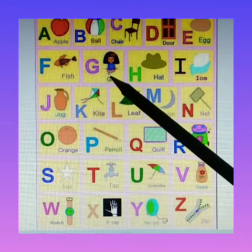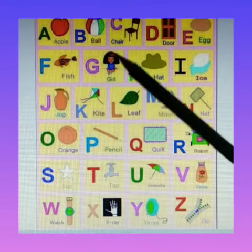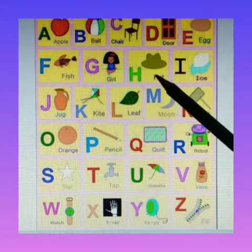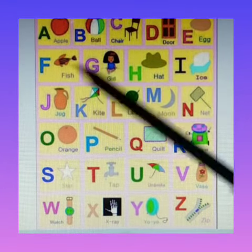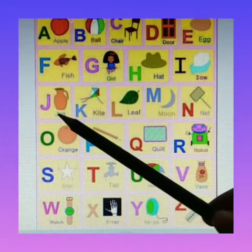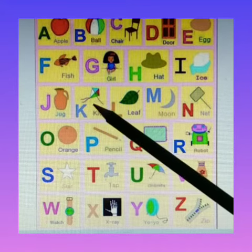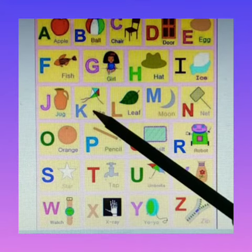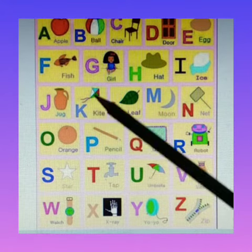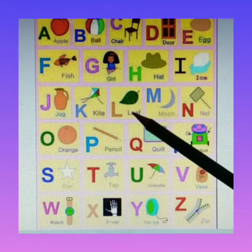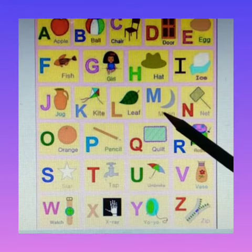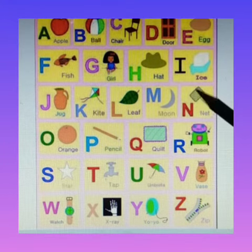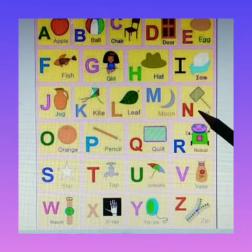G for Girl, H for Hate, I for Eyes, J for Jug, K for Kite, L for Leaf, M for Moon, N for Net.